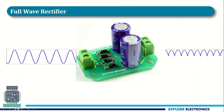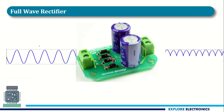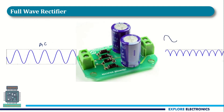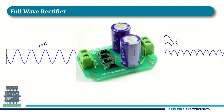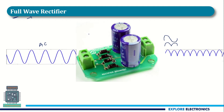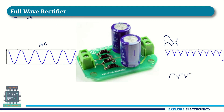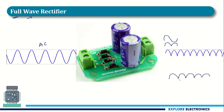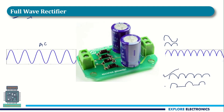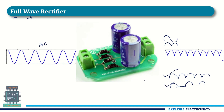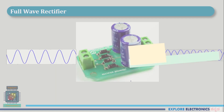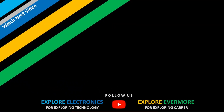This brings us to the full wave rectifier. In the full wave rectifier, both the positive and negative half cycles of the input produce a positive output, meaning the diodes conduct in the full cycle, giving more output compared to the half wave rectifier. The efficiency of the full wave rectifier is higher, which is why it is preferred. We will understand the full wave rectifier in the next video.